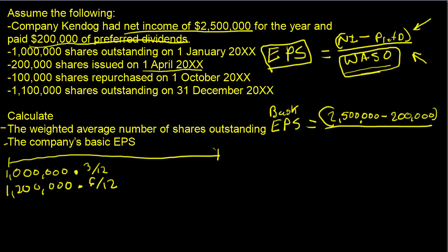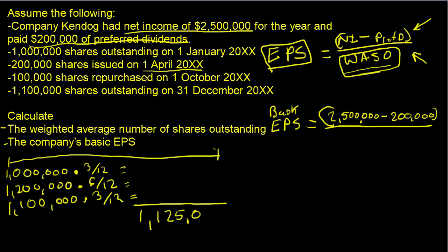Then we repurchase 100,000 shares, so the share balance changes to 1.1 million. That lasts for three months — October, November, and December. So we have three out of 12 months, which is one-fourth. We have three-twelfths (one-fourth), then six-twelfths (one-half), then three-twelfths (one-fourth) again.